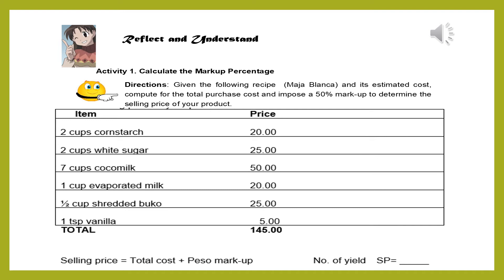The ingredients of mahablanca are: two cups cornstarch at 20 pesos, two cups white sugar at 25 pesos, seven cups cocoa milk at 50 pesos, one cup evaporated milk at 20 pesos, one half cup shredded buko at 25 pesos, and one teaspoon vanilla at 5 pesos — for a total of 145 pesos. Now compute the selling price using the formula: total cost plus your peso markup equals your selling price.